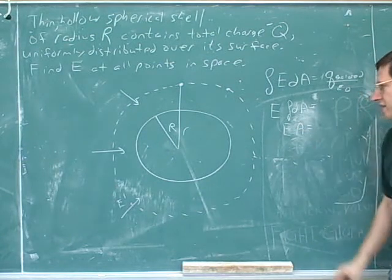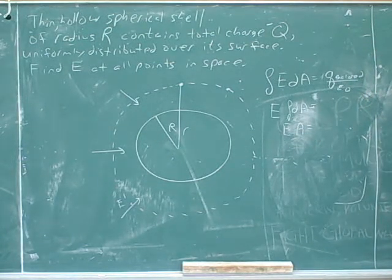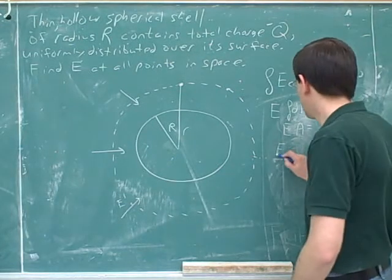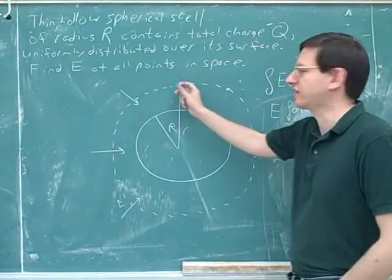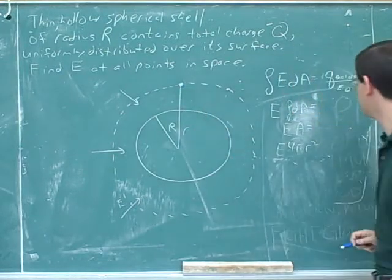So we get to our usual formula for a constant electric field. Well, how do we calculate the area, capital A? 4 pi r squared. Same way as before. Lowercase r, because we're focusing on the area of the Gaussian surface.